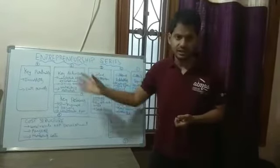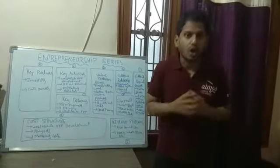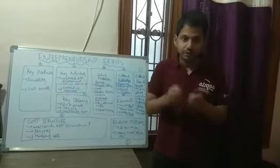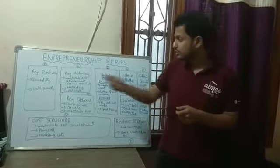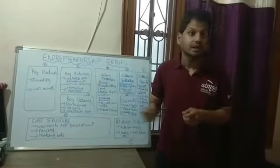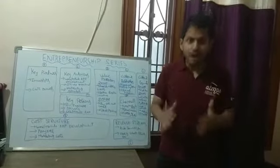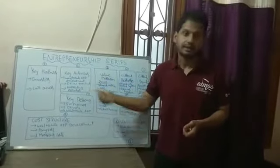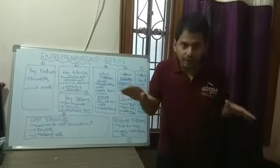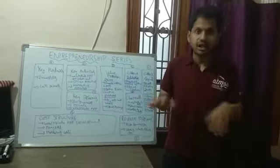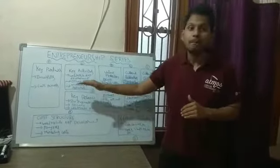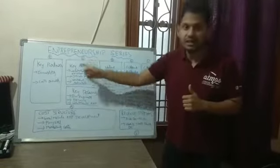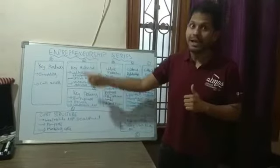Next, key activities — what are the activities your startup is doing all the time? For Uber, they have to develop the web and mobile platform because every booking is done there. Then driver recruitment — if you don't have drivers on board, you are lost. And marketing — online car booking is a cutthroat competition with many rivals, so you should have a good marketing team to stand out. These are the key activities your startup has to do always.